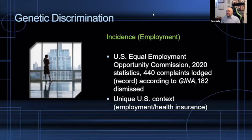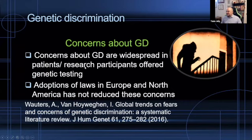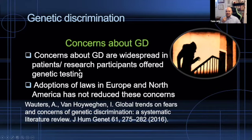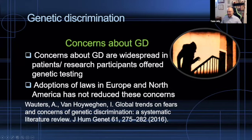We can't say it's widespread, but it is an issue — specifically if you're a carrier of a monogenic dominant condition that is serious or life-threatening. What's even more preoccupying is that if genetic discrimination is not widespread, concerns about it are widespread, and there are studies to attest to that, such as the study by Waters and Van Eywegen done in 2016. That study demonstrates that concerns about genetic discrimination are much more frequent than actual cases of discrimination, and that adoption of laws in Europe and North America have not really reduced these concerns. Just adopting a law against genetic discrimination will not necessarily completely resolve the problem.